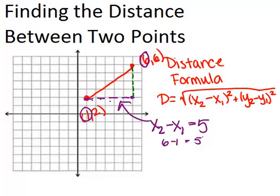Now, to get our y2 minus y1, we would count how many squares we have to go up, what is our vertical distance, and that's going to be 4. And again, we could also get that by looking at the y-coordinates 6 and 2 and subtracting those. So, y2 minus y1 equals 4.